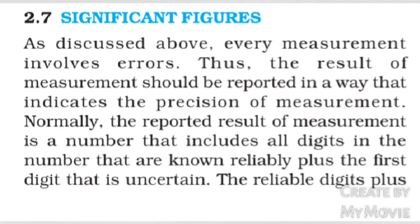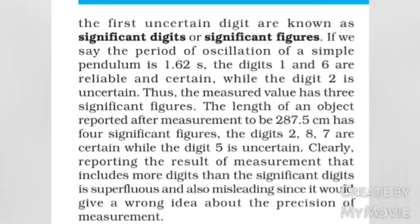The reliable digits plus the first uncertain digit are known as significant digits or significant figures. If we say the period of oscillation of a simple pendulum is 1.62, the digits 1 and 6 are reliable and certain, while the digit 2 is uncertain. Thus, the measured value has three significant figures.